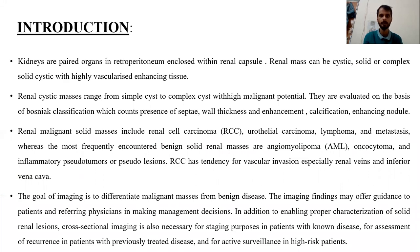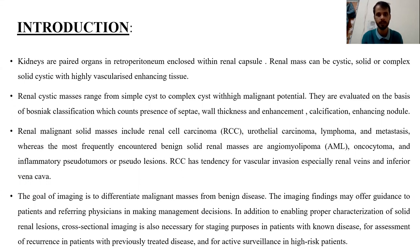Kidneys are paired organs enclosed within a renal capsule and perinephric fat. Renal masses range from cystic to solid to complex solid-cystic lesions with heterogeneously enhancing tissues within. Renal cystic masses range from simple cystic to complex cystic with high malignant potential, and they are evaluated on the basis of Bosniak classification, which accounts for the presence of septa, wall thickness, enhancement, calcification, and endophytic nodules within the mass.